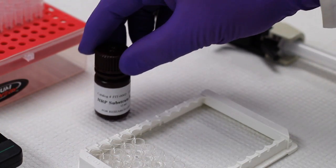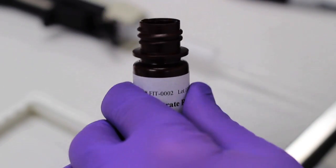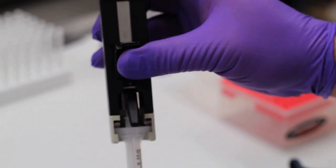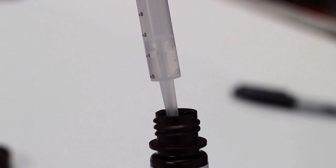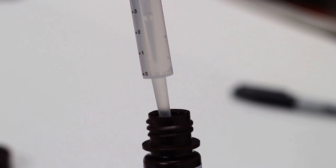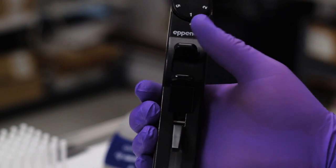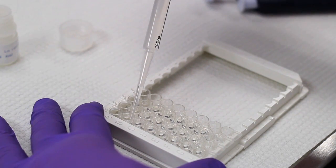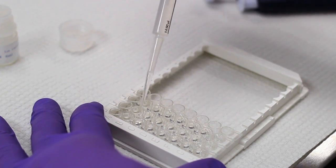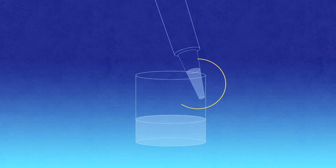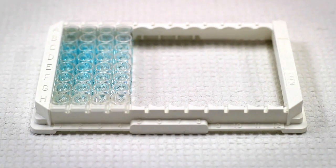Now it is time to add the HRP substrate reagent. Inspect the reagent to be sure it is colorless. If the solution is dark blue, the reagent is contaminated and will not work. Using a calibrated single channel repeating pipette, add 100 microliters of HRP substrate reagent to each well, making sure to place the tip at the top of each well. After adding the reagent, allow the plate to incubate without shaking for 30 minutes.